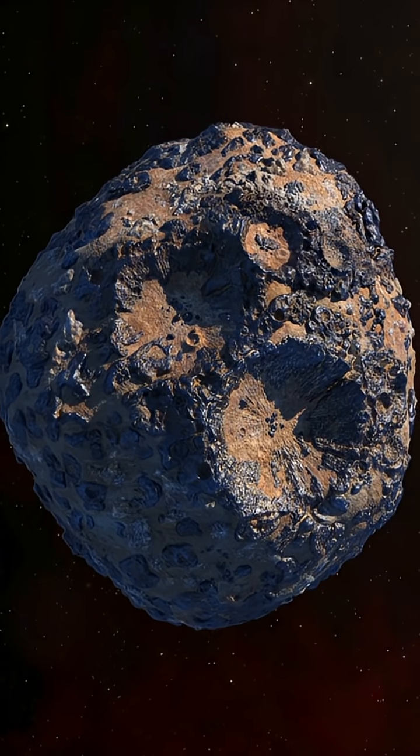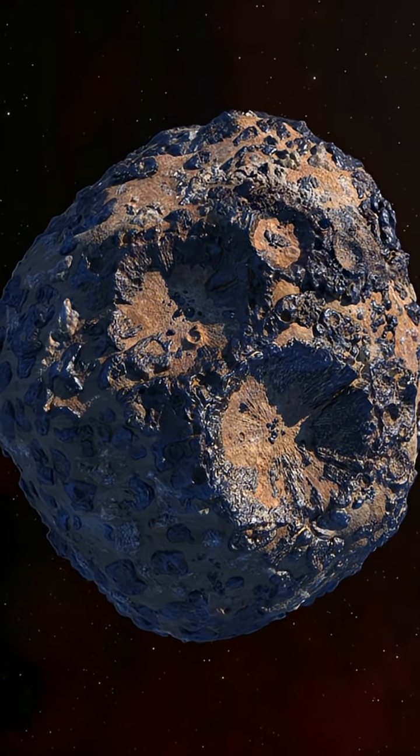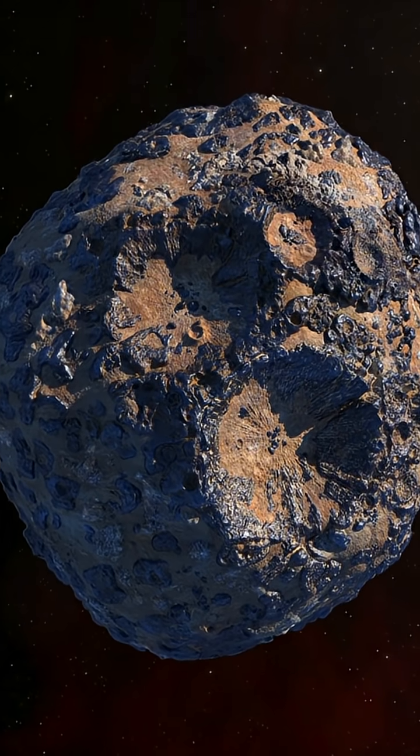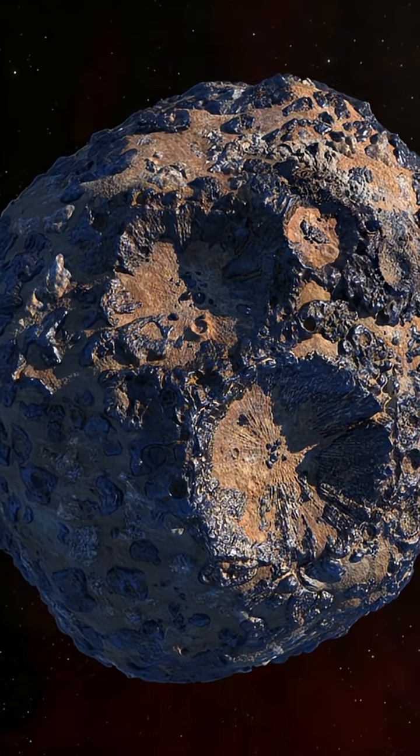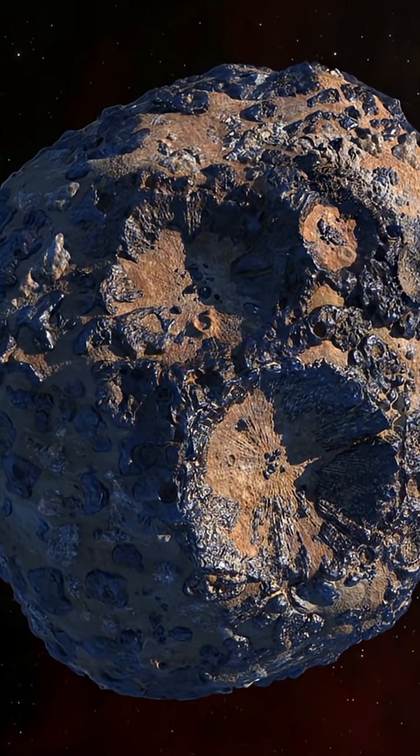What makes this asteroid so interesting is that it is believed to be a remnant of a planetary core. Scientists believe the asteroid is made up mostly of nickel and iron, due to its surface reflecting about 6-12% of light.